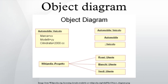In the unified modeling language, an object diagram focuses on some particular set of objects and attributes, and the links between these instances.